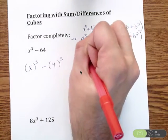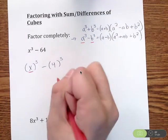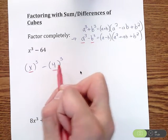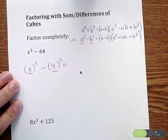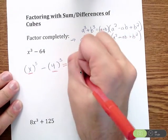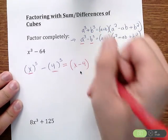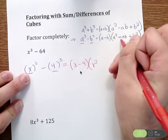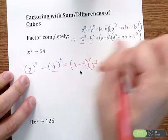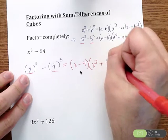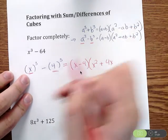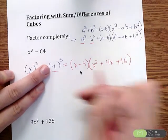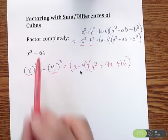We have a cubed minus b cubed, where x is our a and 4 is our b. I'm going to plug into the difference of cubes formula. So this equals a minus b — that's x minus 4 — and then a squared, which is x squared, plus a times b which is x times 4, which is 4x, and then plus b squared. Well, b is 4 and 4 squared is 16. So the correct factorization of x cubed minus 64 is (x − 4)(x² + 4x + 16).